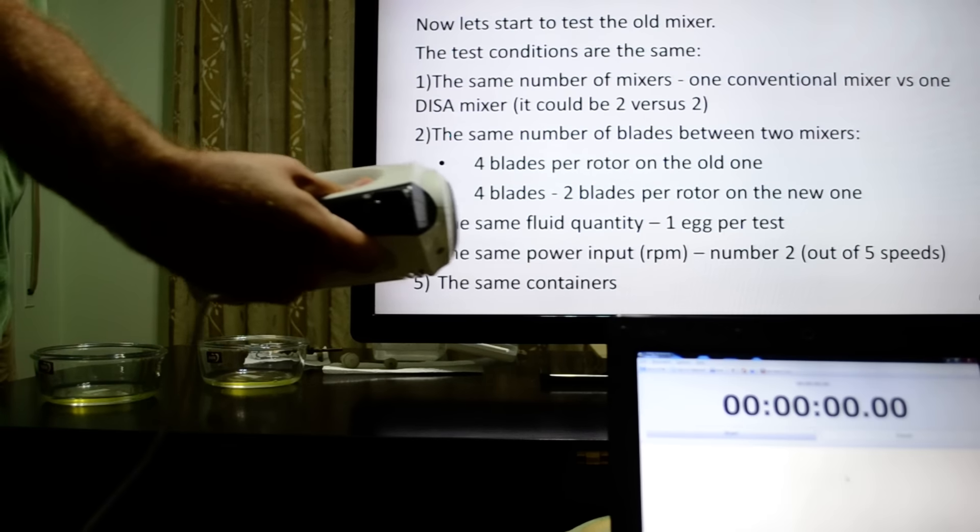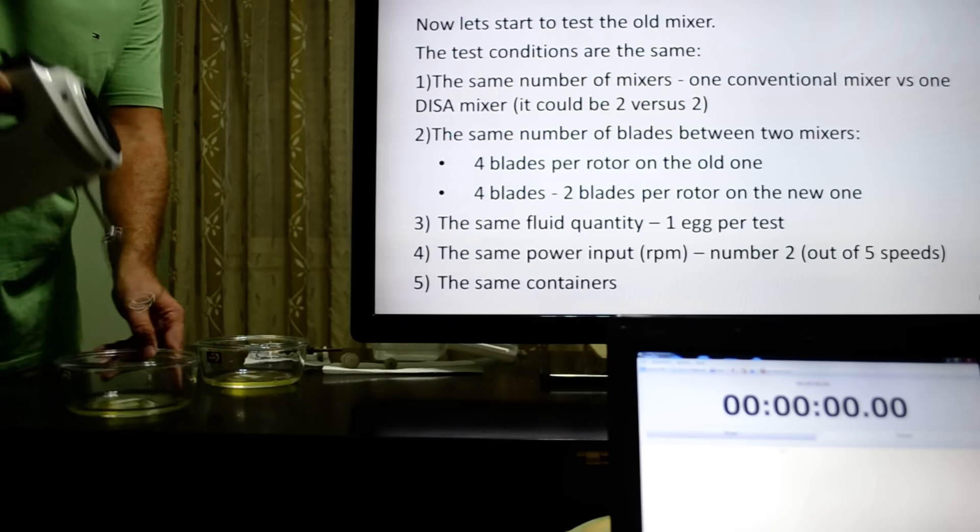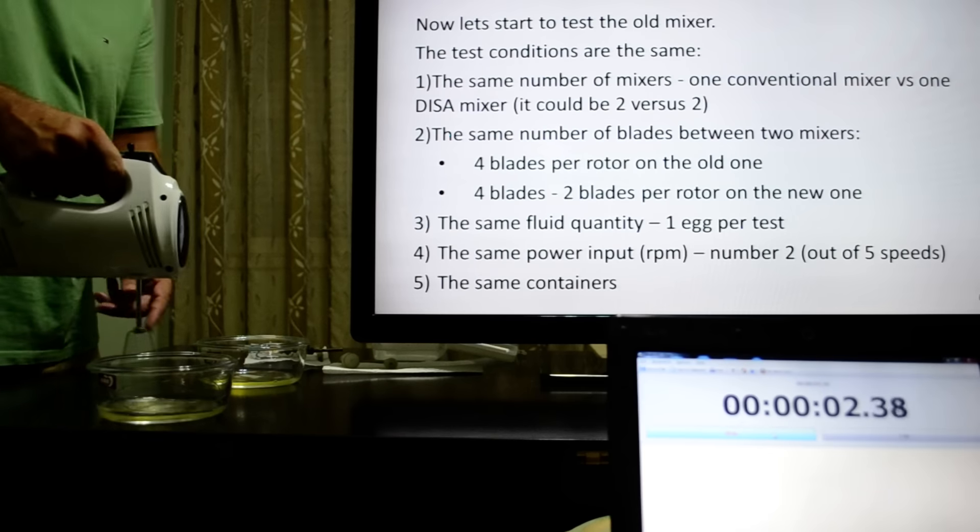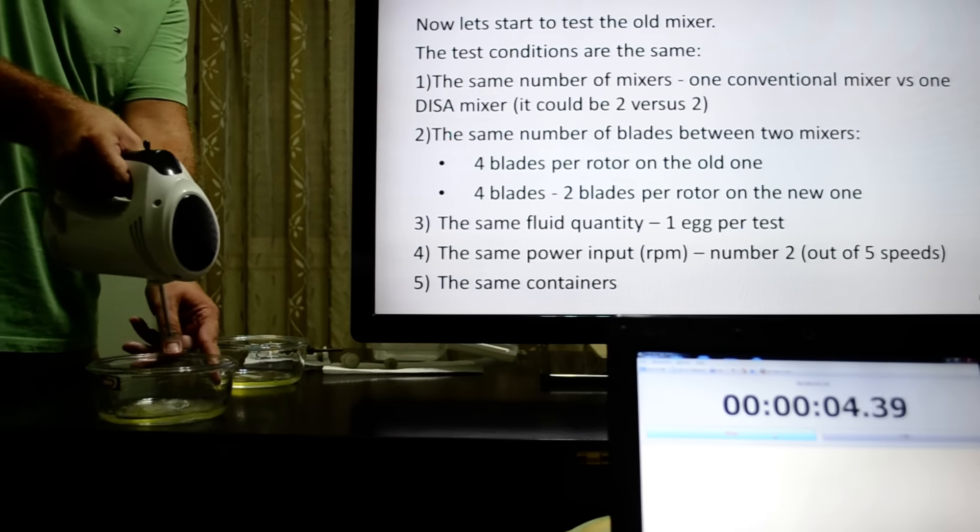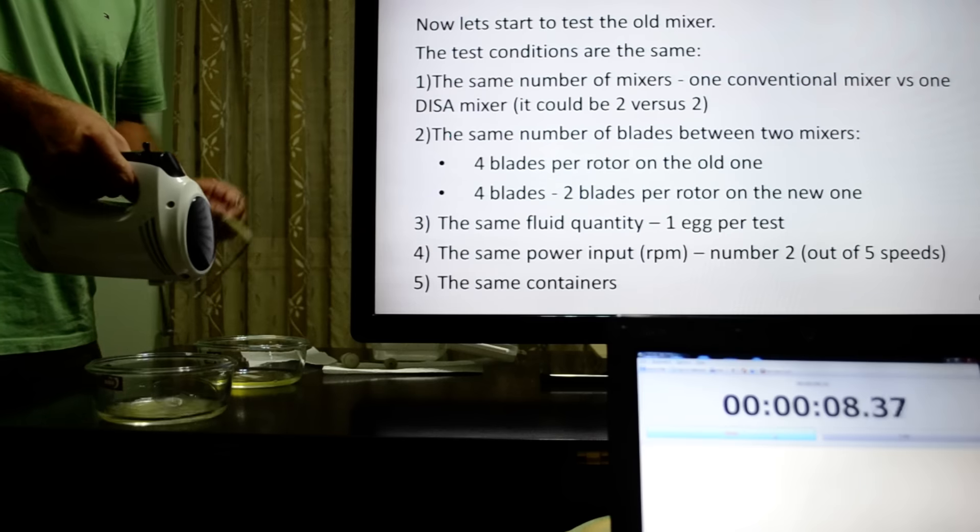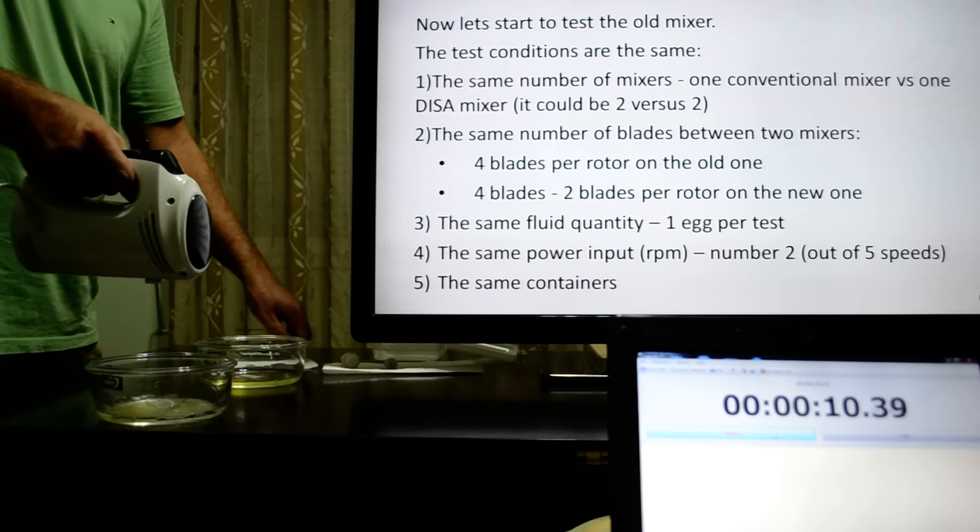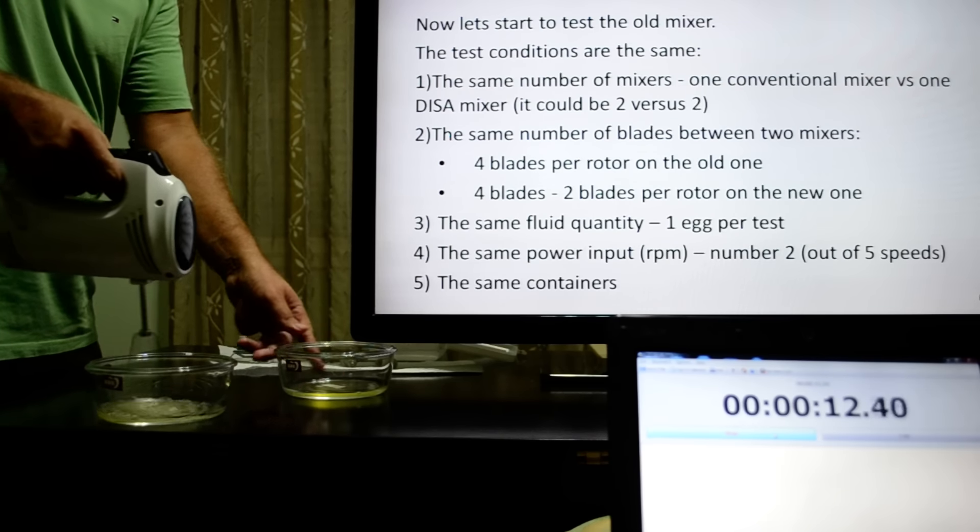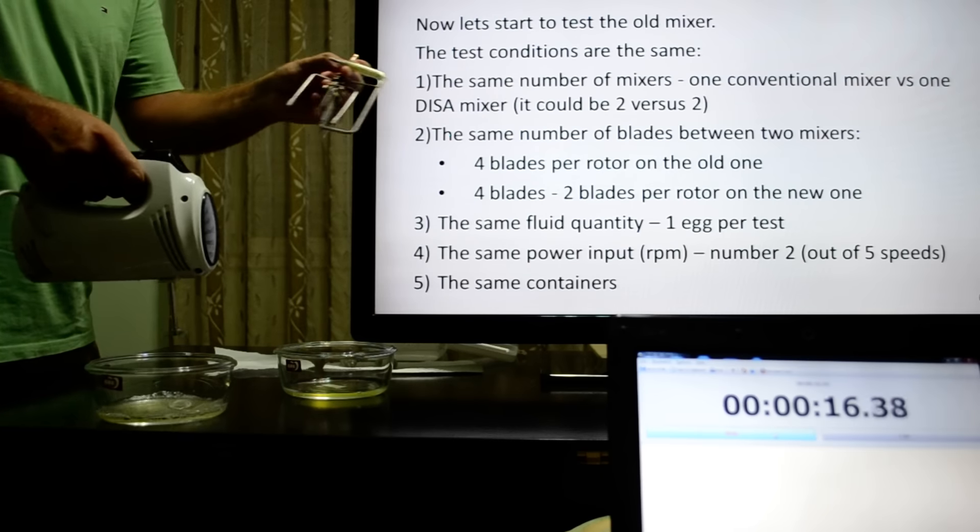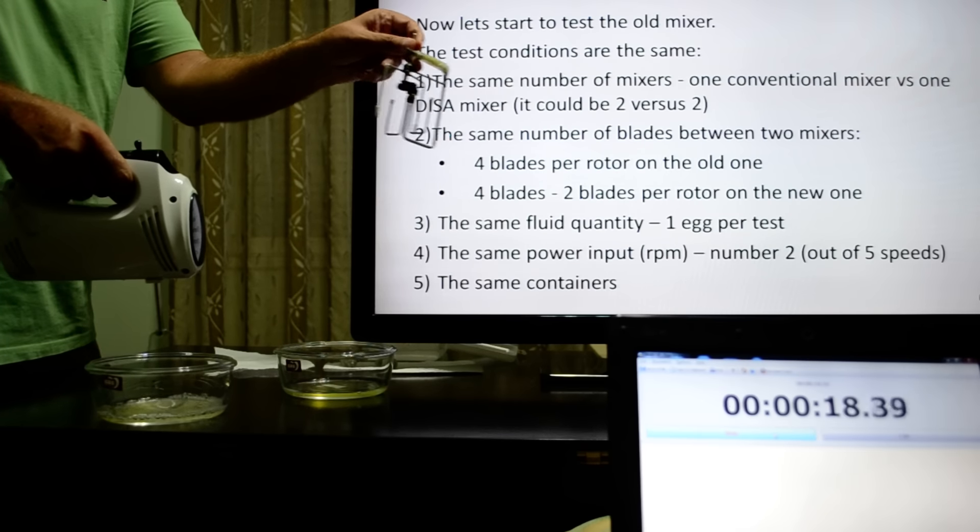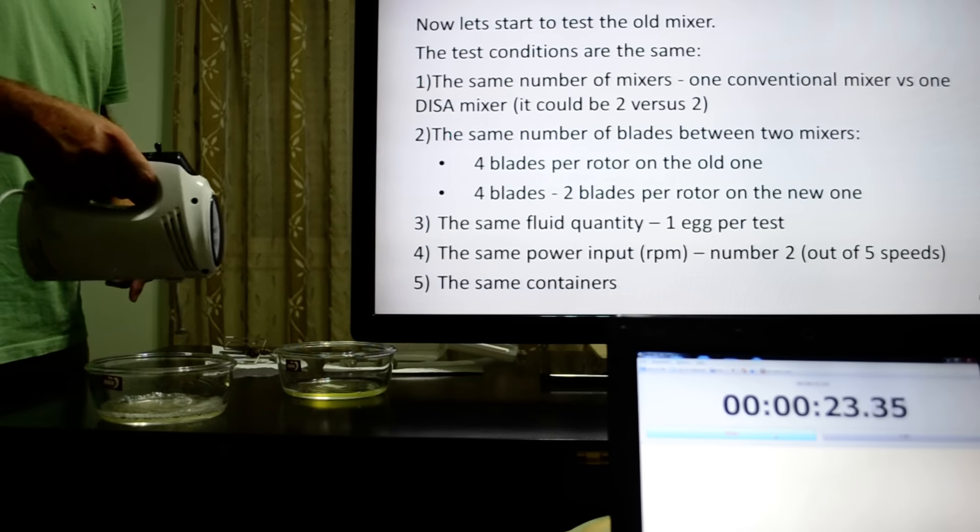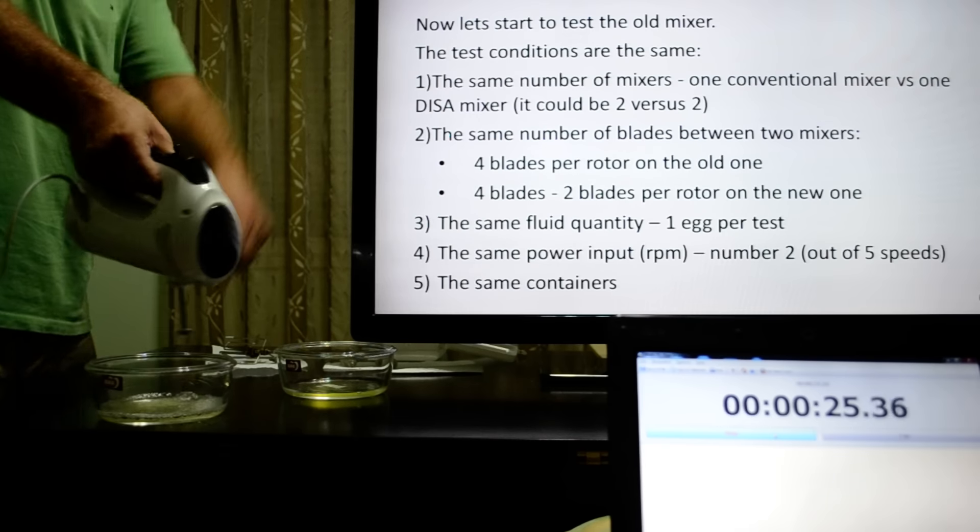Now let's start to test the old mixer. The test conditions are the same: same number of mixers, one conventional mixer versus one DISA mixer. It could be two versus two. The same number of blades, two mixers, four blades per rotor on the old one, four blades and two blades per rotor on the new one. The same fluid quantity, one egg per test. The same power input, number two, and the same containers.